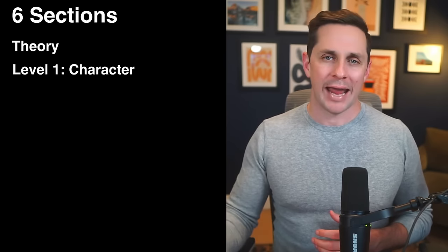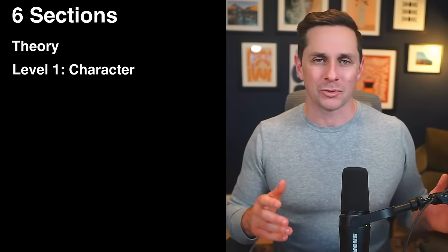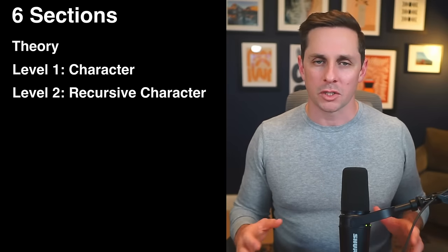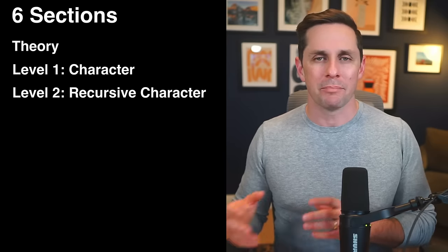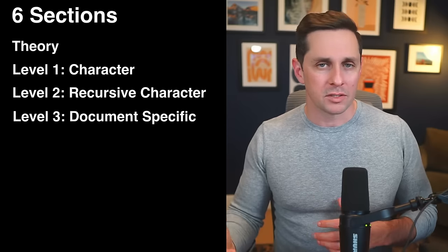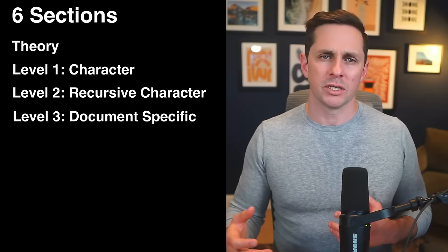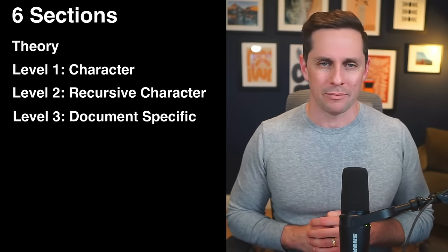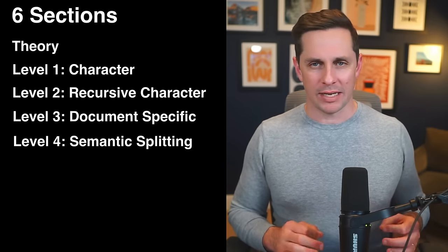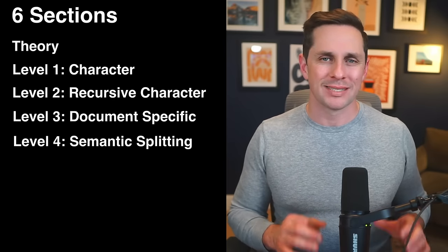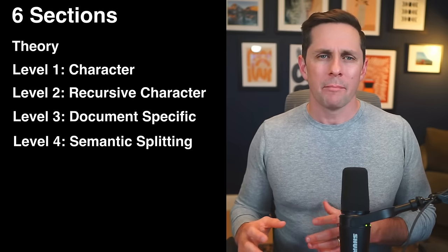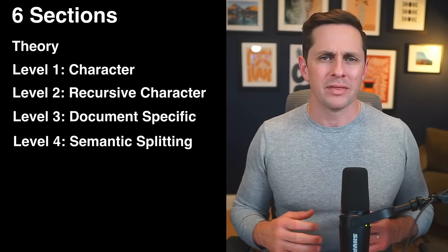For level one we're going to talk about character splitting — when you split your documents by a static character limit. For level two, recursive character text splitting, where you recursively go through a document and split it by a different list of separators. For level three, document-specific text splitting — Python docs, JavaScript docs, or PDFs with images, including multimodal. The first three levels are all naive ways of splitting, focused on the physical positioning and structure of the text, like sorting a library based on book sizes rather than actual content.